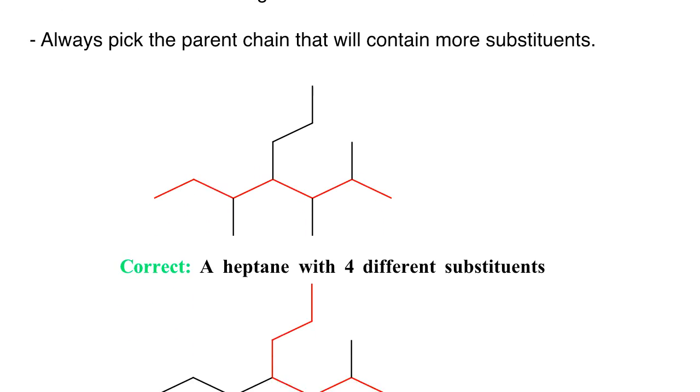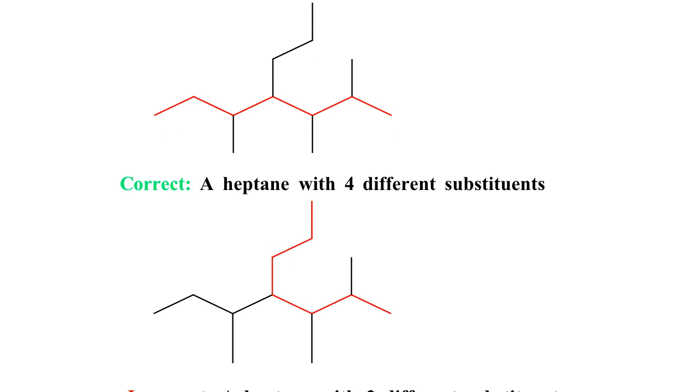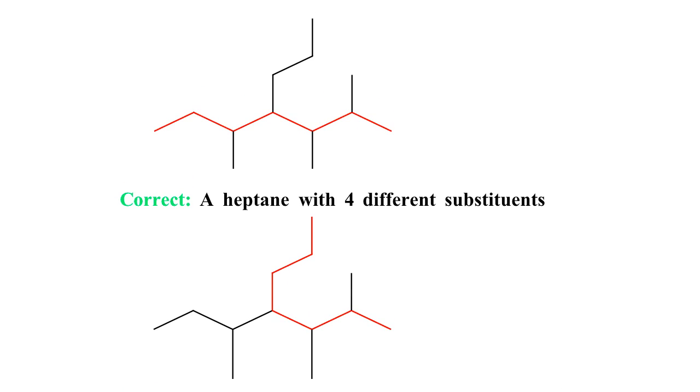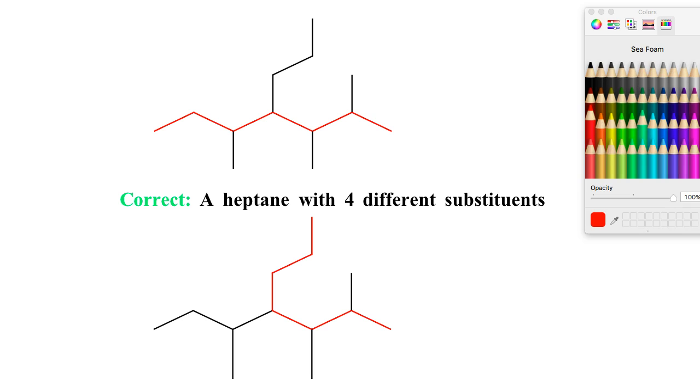So let's take a look at an example here. Here are two different paths for the same compound. Now, if you take a look at the top path, this is going to be the correct path.